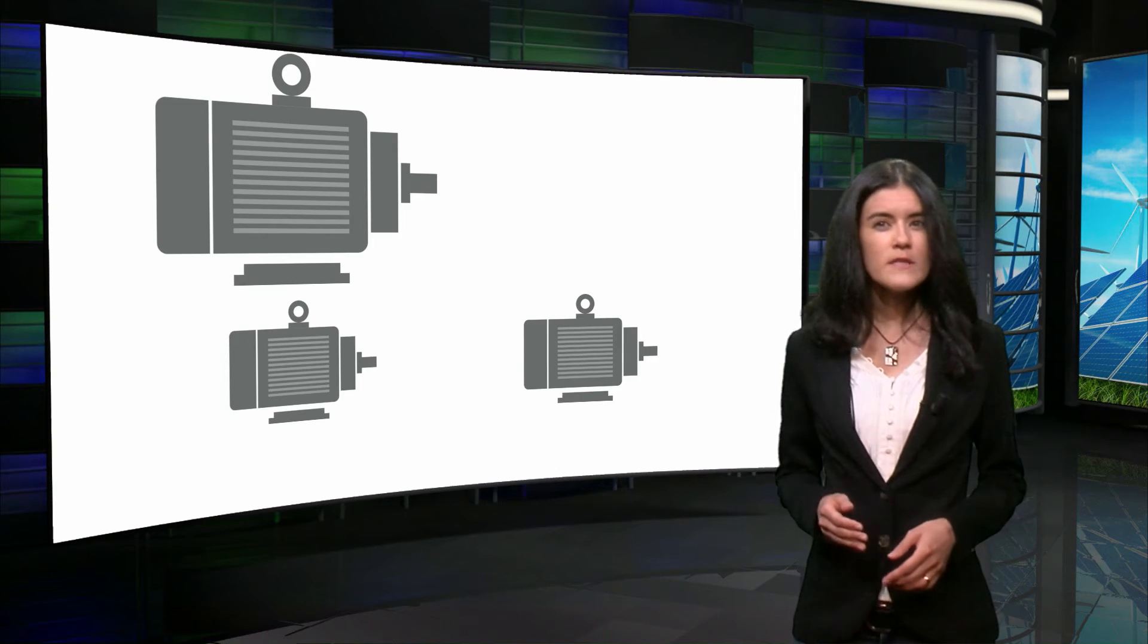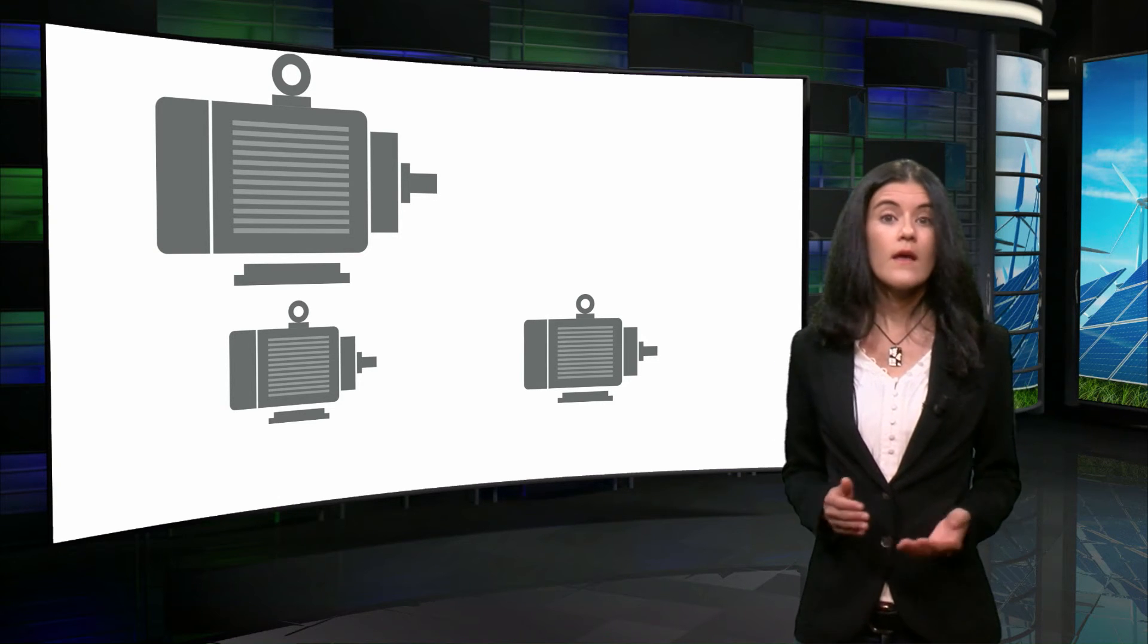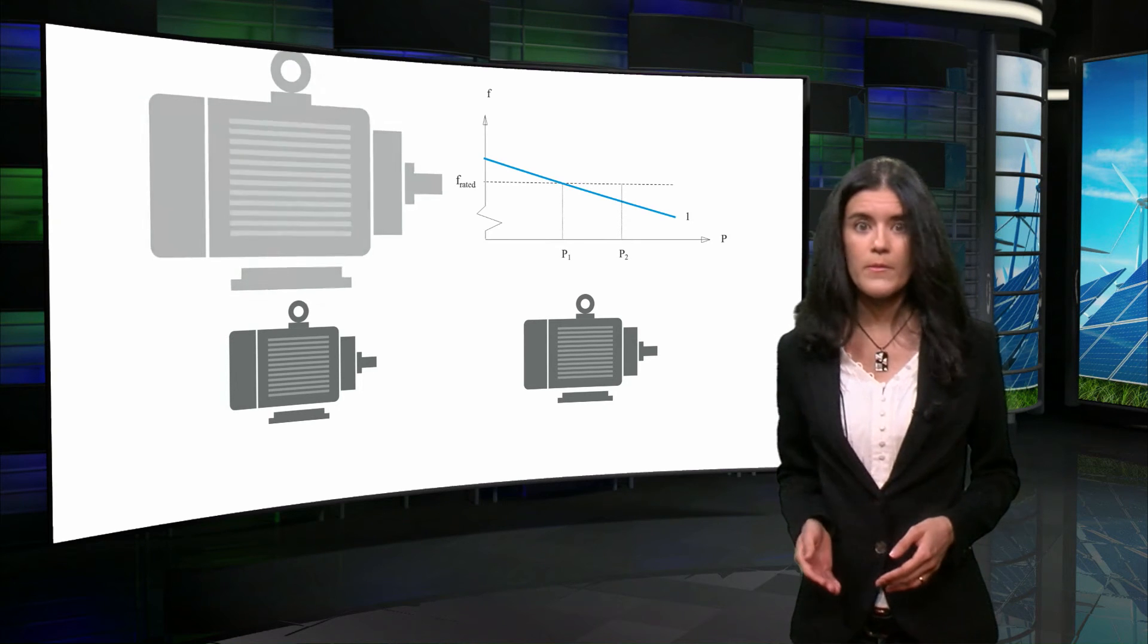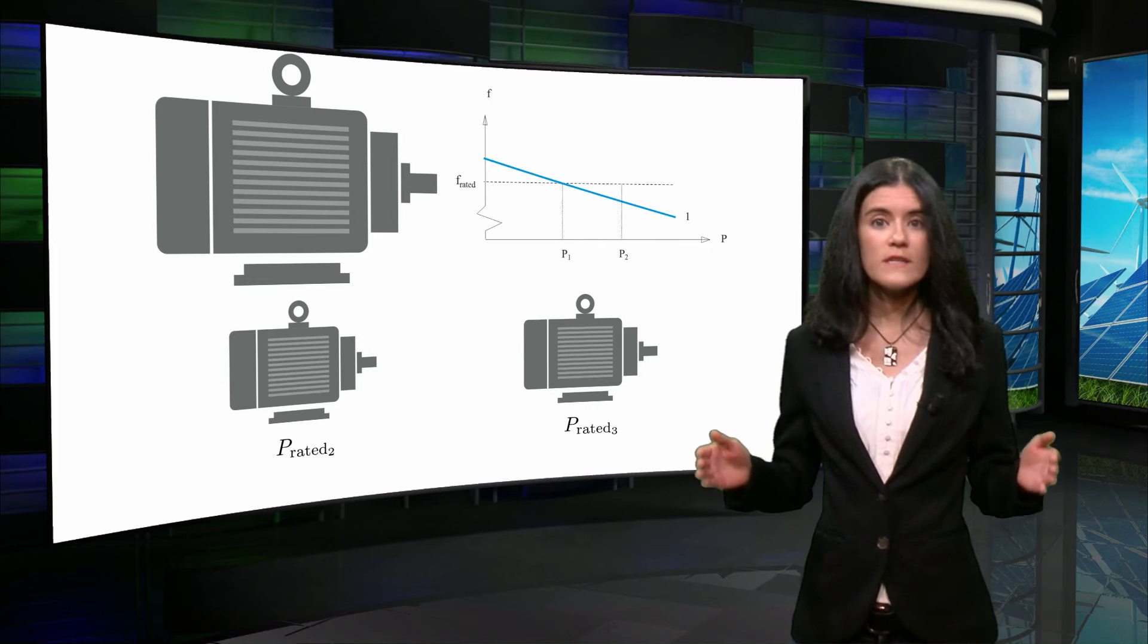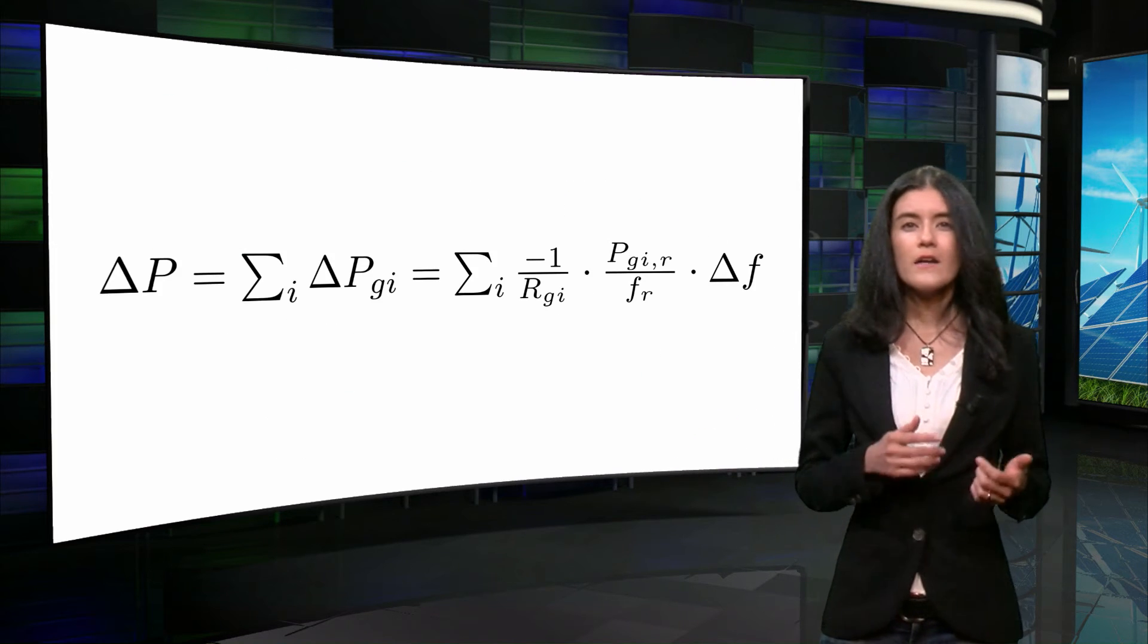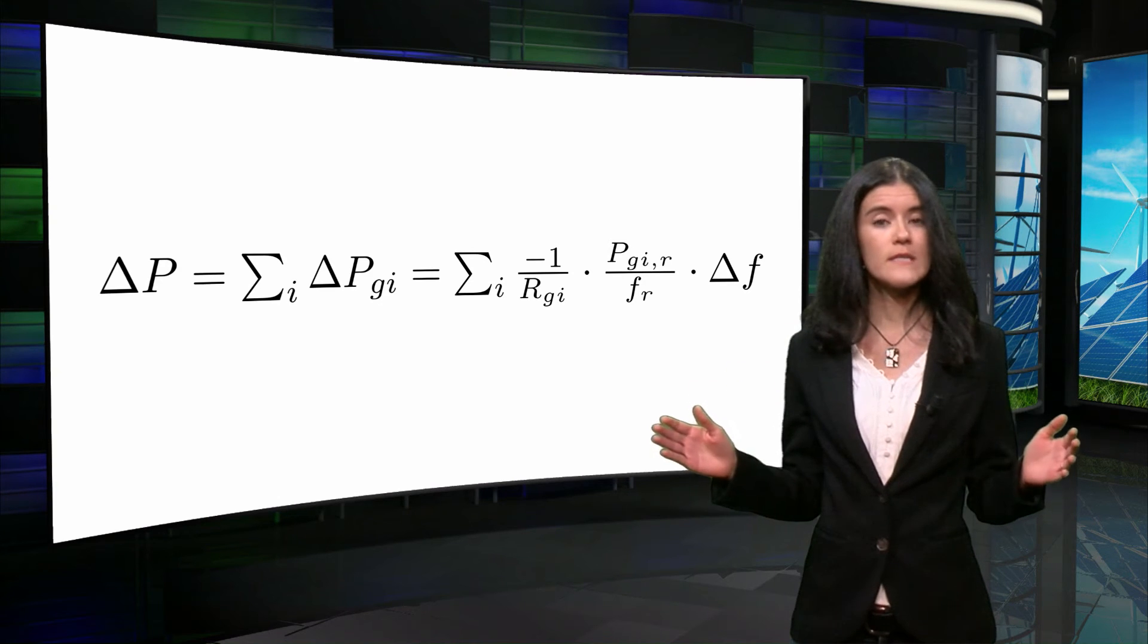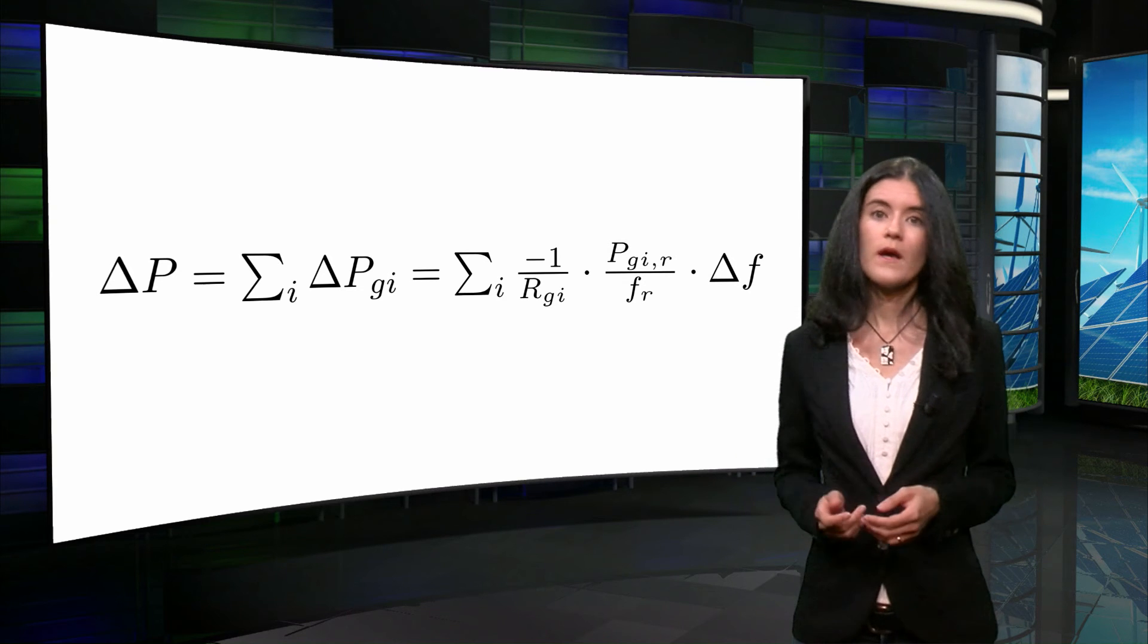For a multi-generator system, the network power frequency characteristic, given by lambda, is determined by the droop of the primary active power controls, and the nominal rated power of all generators in the system. In such case, a change in active power consumption is made by all generators in the system, given as the combination of all droops, as shown in the equation.